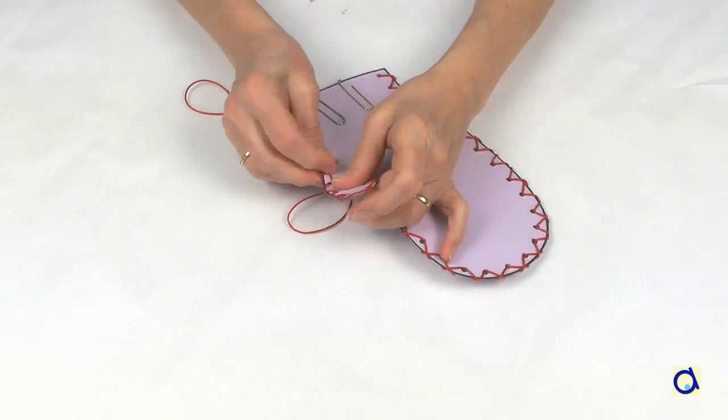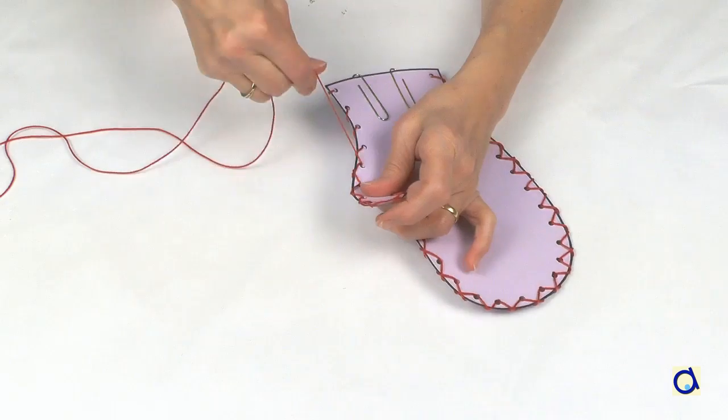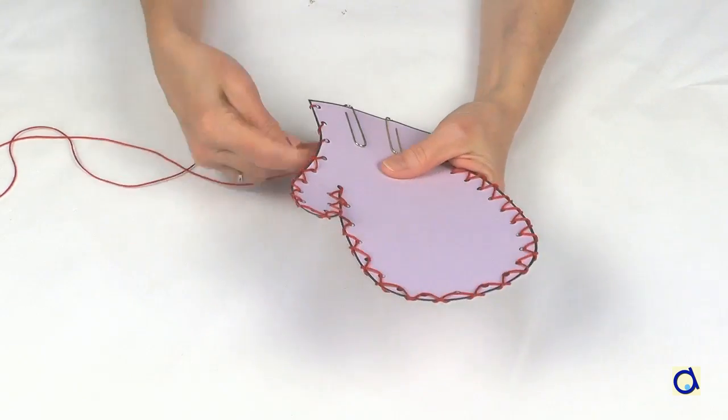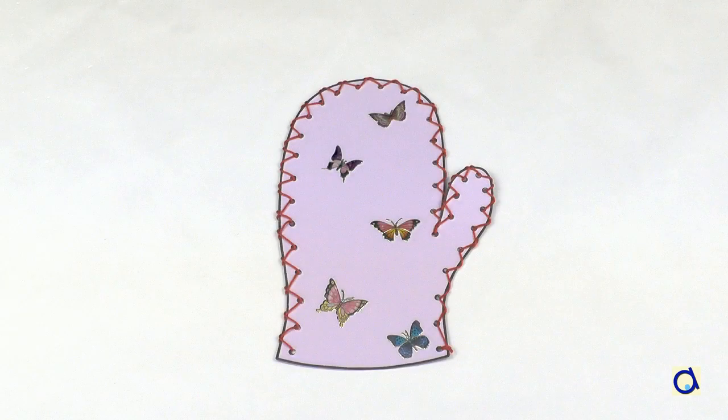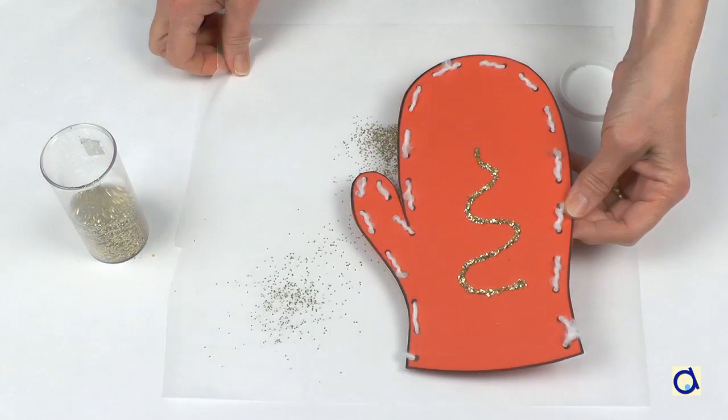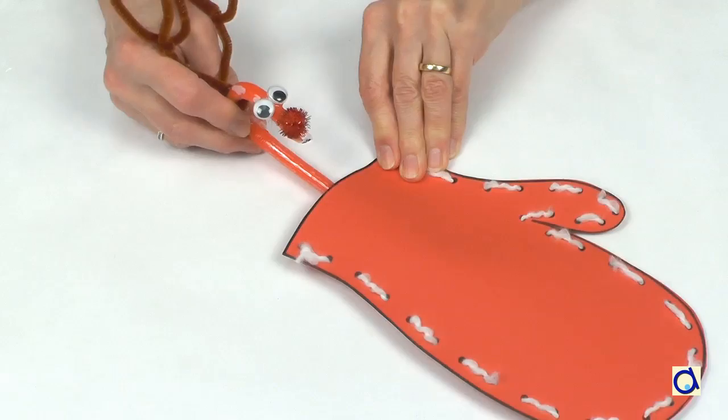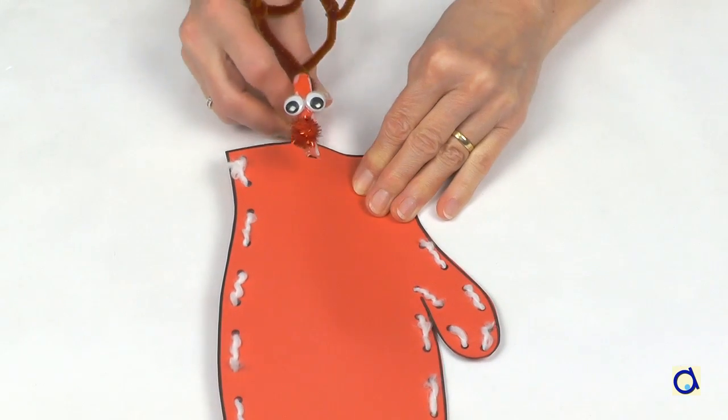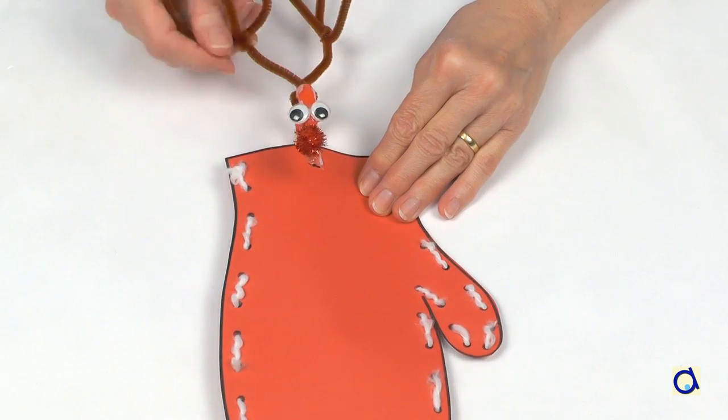I chose to use only one color but you could very well use two different colors. The children can also decorate the mittens with stickers, paint, or glitter. When the mitten is completed, you can insert a Christmas cane or other surprises in it.